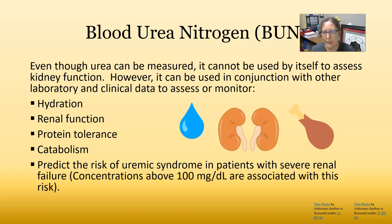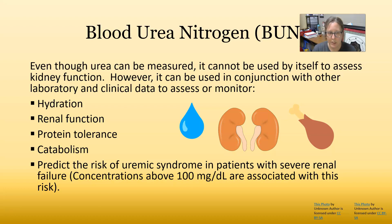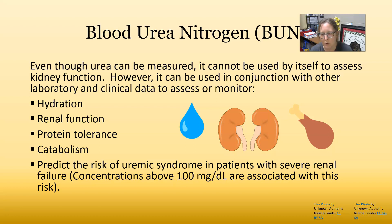Urea cannot be used by itself to assess kidney function; however, it can be used in conjunction with other laboratory and clinical data to assess or monitor hydration, renal function, protein tolerance, and catabolism, and to predict the risk of uremic syndrome in patients with severe renal failure. Concentrations above 100 milligrams per deciliter are associated with the risk of uremic syndrome.